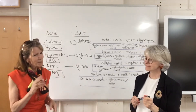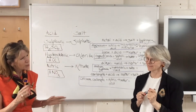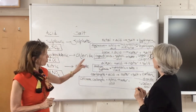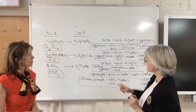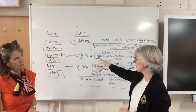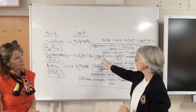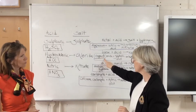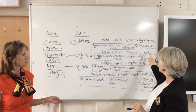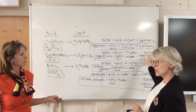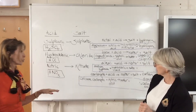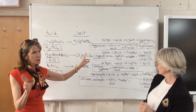Why does the Roman numeral two appear? That tells you the charge on the copper — some coppers have a different charge, so we have to write down the charge. It's copper(II) oxide, so it must be copper(II) sulfate. If you don't write the two, that's not a good answer.